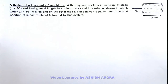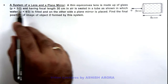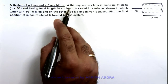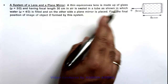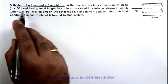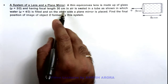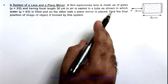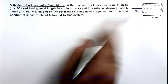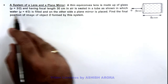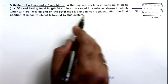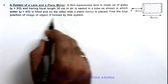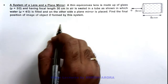In this illustration, we'll discuss a system of lens and a plane mirror. Here we are given that a thin equiconvex lens is made up of glass with refractive index 3/2 and having focal length 30 centimeter in air. It is sealed in a tube, as we can see in the figure, in which water is filled and on the other side a plane mirror is placed. We are required to find the final position of the image of object O formed by this system.